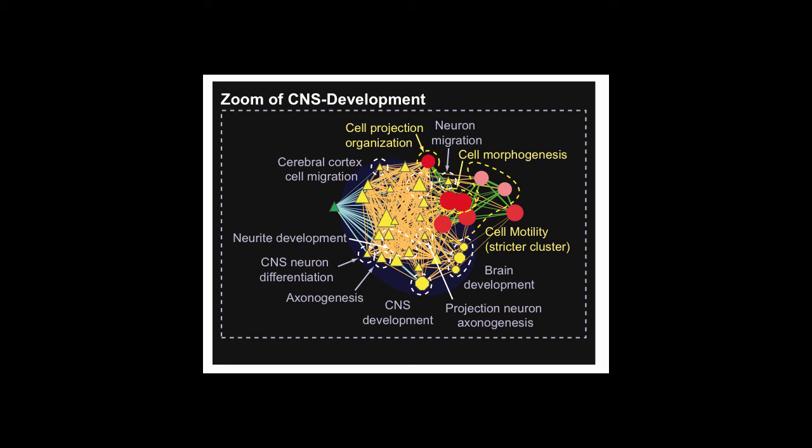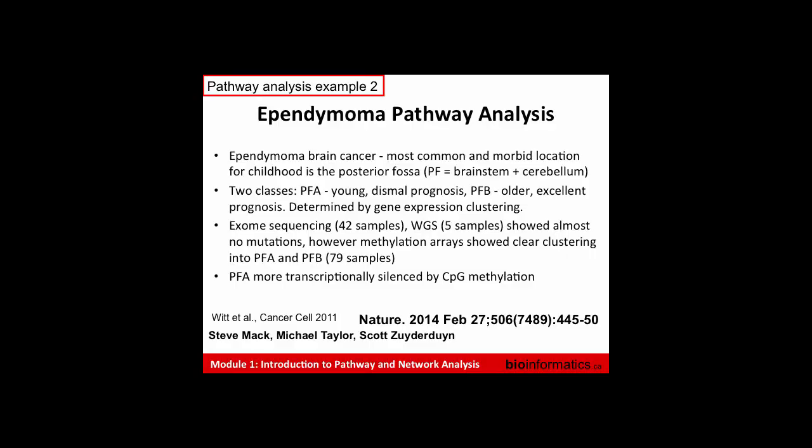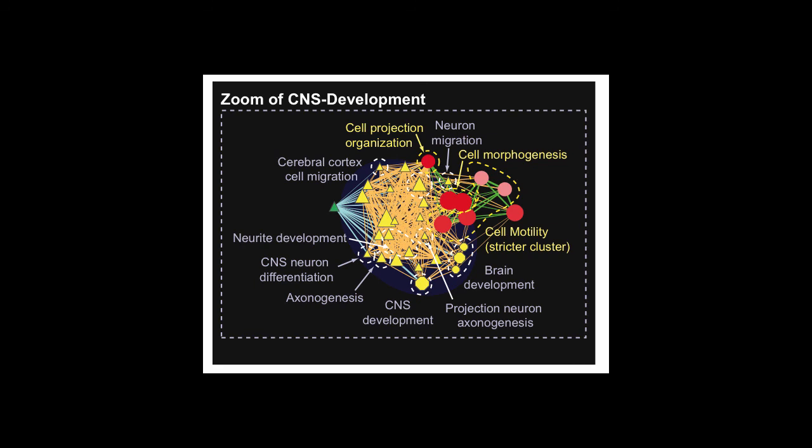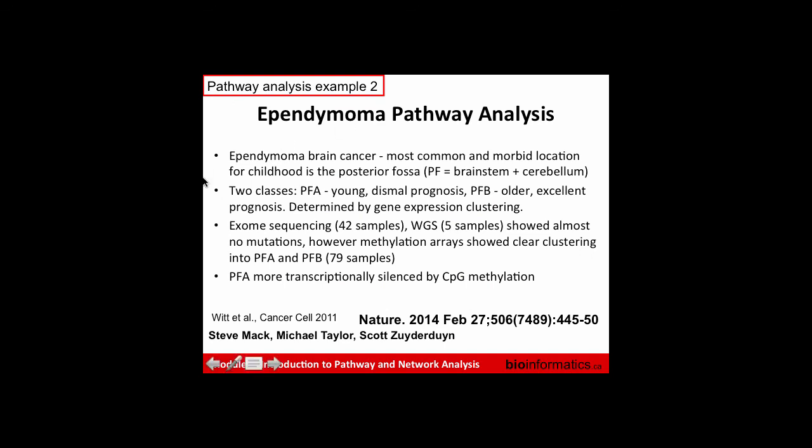This example illustrates how pathway analysis can gain statistical power by collecting rare counts from different genes and putting them together into one bin — doing one statistical test on a pathway. Instead of working with one count at a time across different patients, you're working with a dozen counts, which gives a much stronger answer. That's a very important concept.